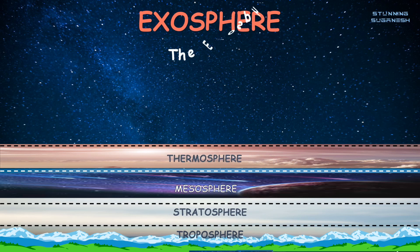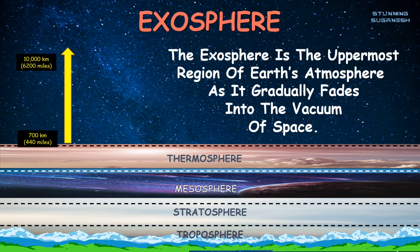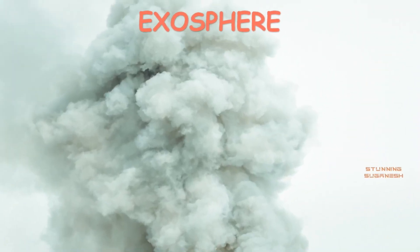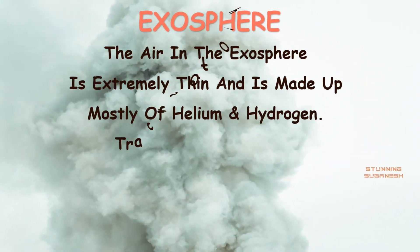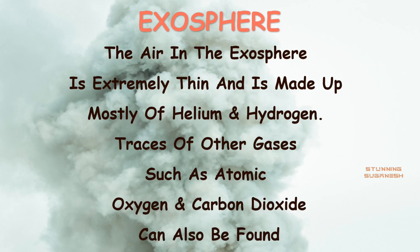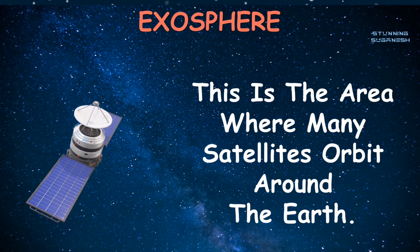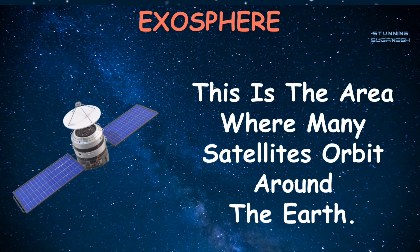The exosphere is the uppermost region of Earth's atmosphere, where it gradually fades into the vacuum of space. The air in the exosphere is extremely thin and is made up mostly of helium and hydrogen. Scattered molecules of gas can be found here, and this is the area where many satellites orbit around the Earth.